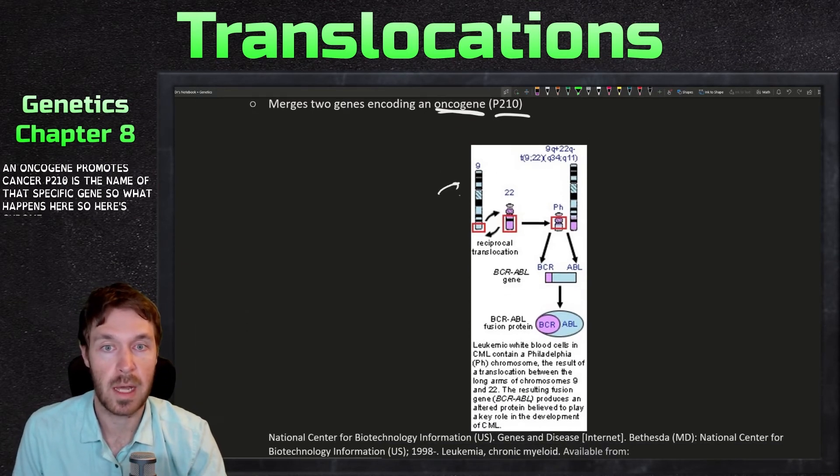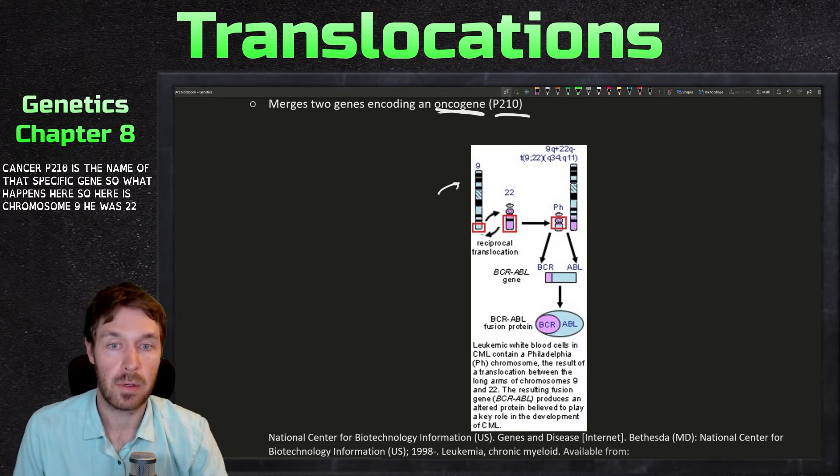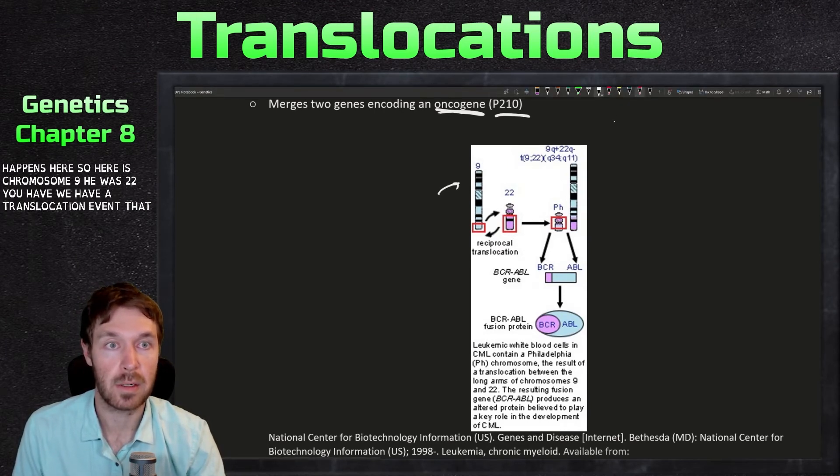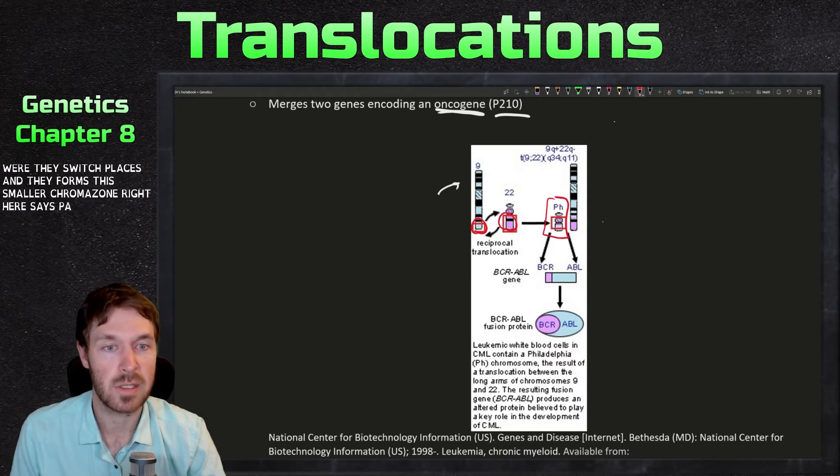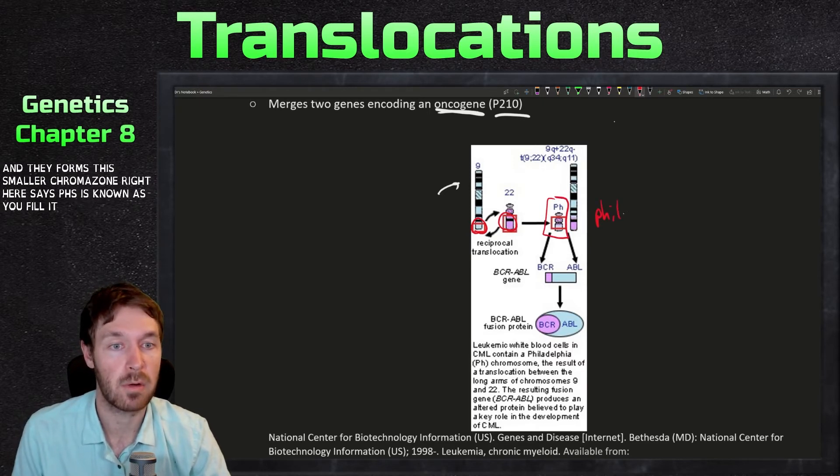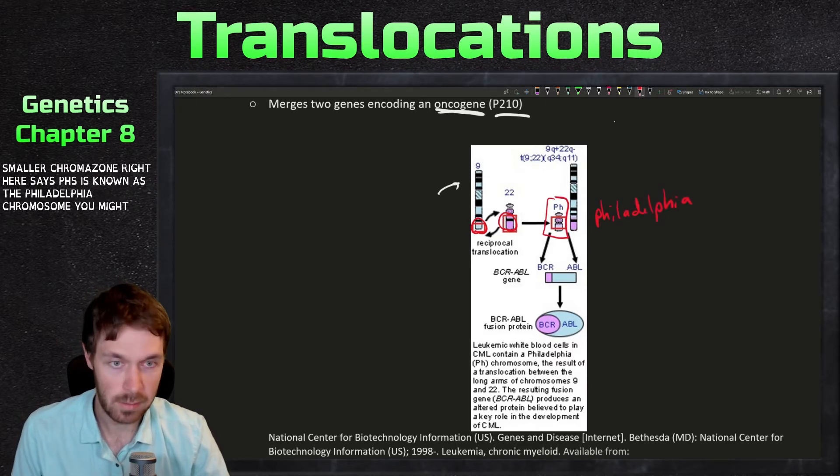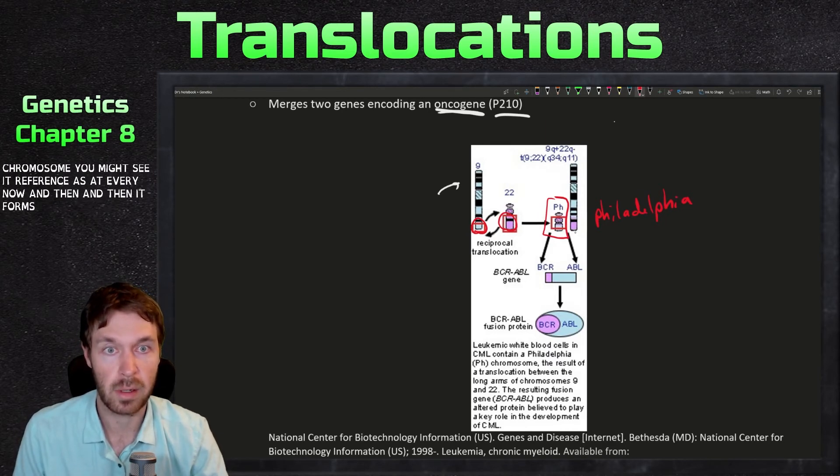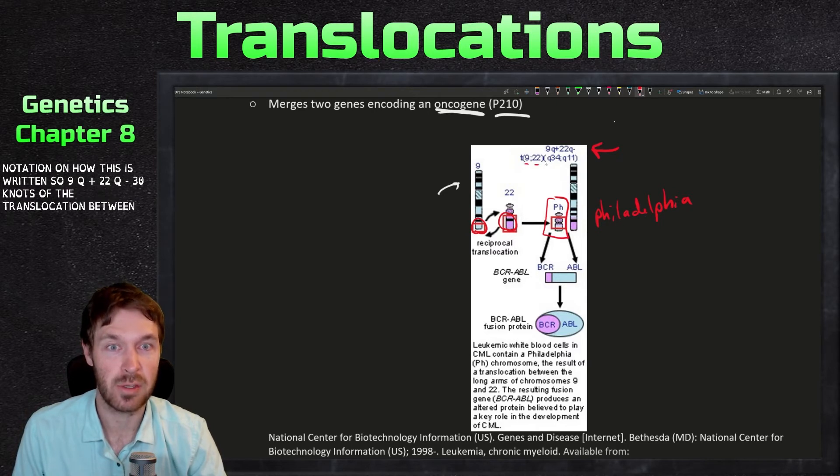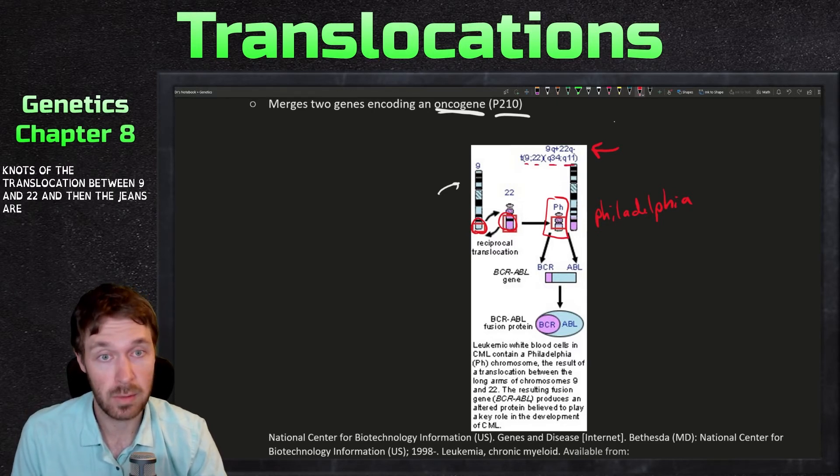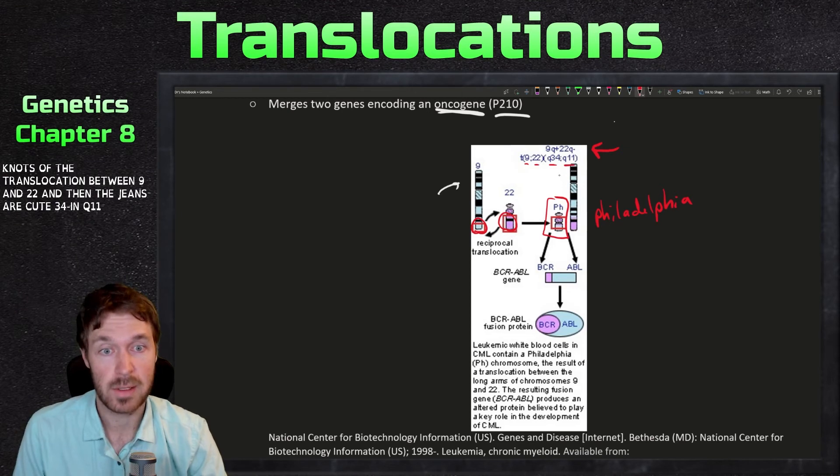So what happens here, so here's chromosome 9, here's 22. We have a translocation event that occurs between the two where they switch places and it forms this smaller chromosome right here. It says pH. This is known as the Philadelphia chromosome. You might see it referenced as that every now and then and it forms this longer arm right here. And also this is the notation on how this is written. So 9q plus 22q minus. So there's a translocation between 9 and 22 and then the genes of q4 and q11. So on the q arm.